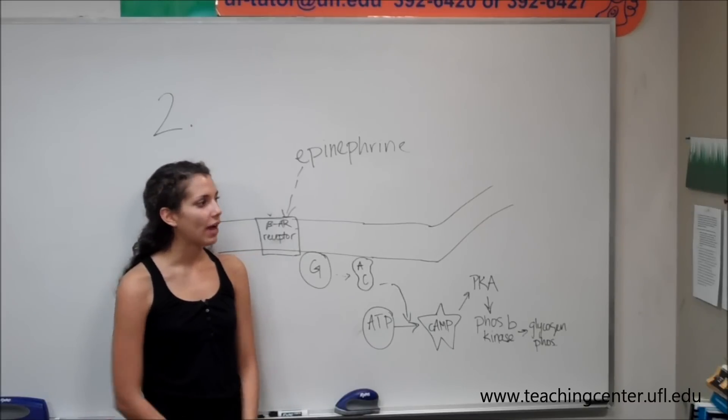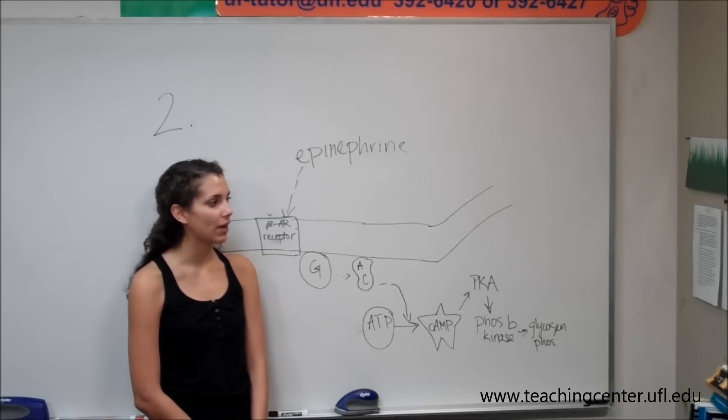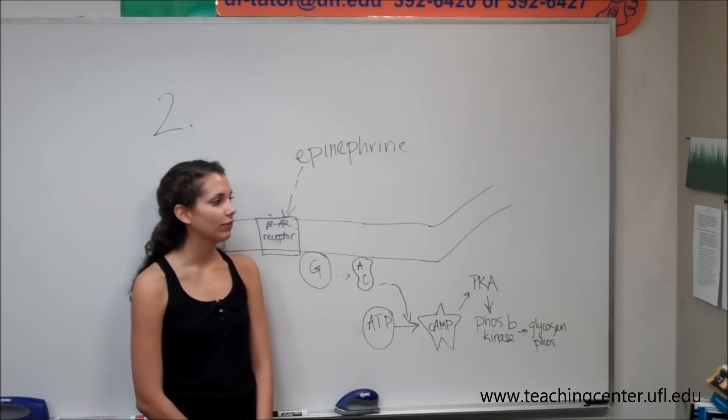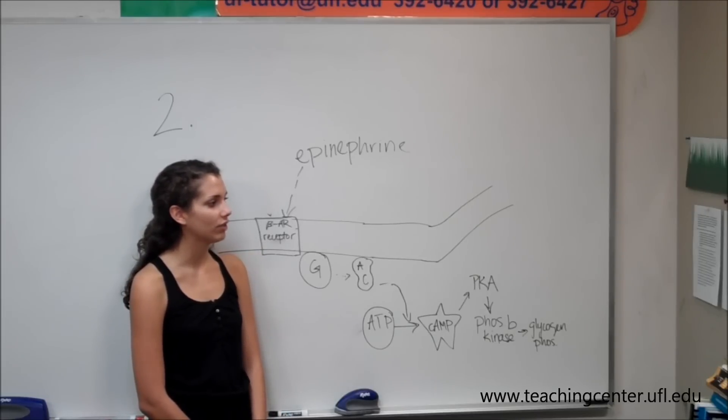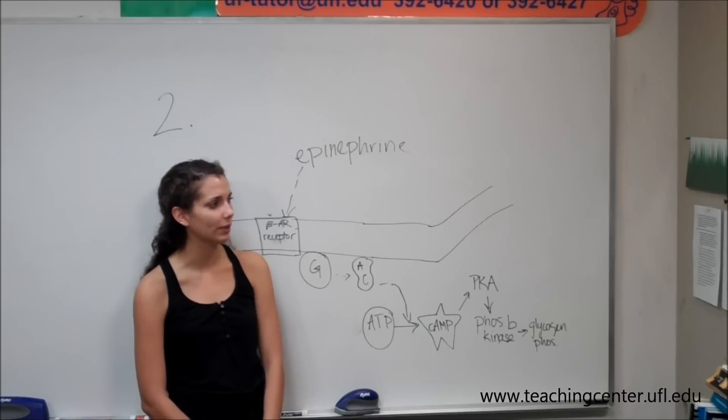So we're going to go on to part B now. Part B says, when the particulate fraction from the centrifugation in A was treated with epinephrine, substance X was produced. The substance was isolated and purified. Unlike epinephrine, substance X activated glycogen phosphorylase when added to the clear supernatant fraction of the centrifugation homogenate.